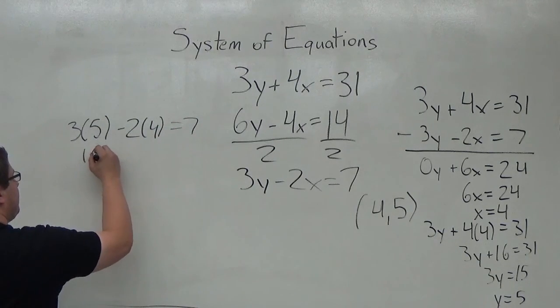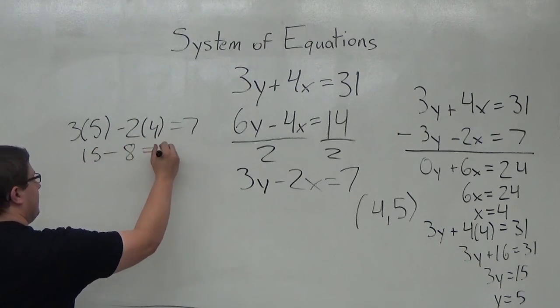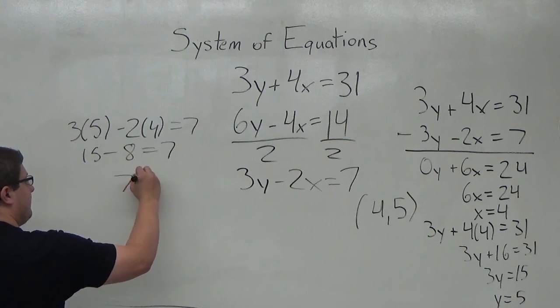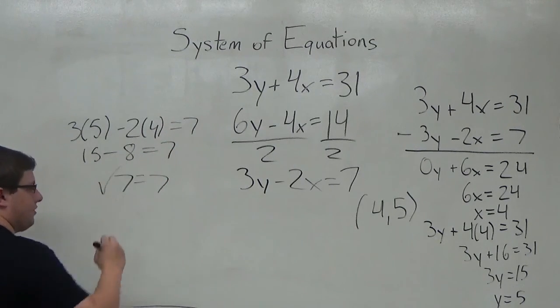15 minus 8 equals 7. 7 is equal to 7, so the check works.